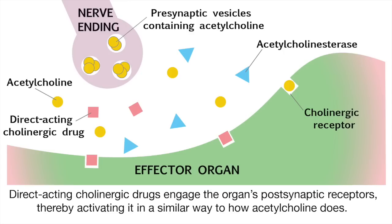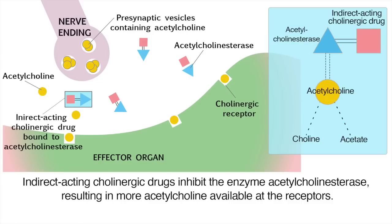Direct acting cholinergic drugs bind to cholinergic receptors on specific effector organs, stimulating the organ in a similar way as acetylcholine. They are synthetic derivatives of choline and have a widespread systemic effect including cardiac muscle, smooth muscle, exocrine glands, and the eye. Indirect acting cholinergic drugs inhibit the enzyme acetylcholinesterase, resulting in more acetylcholine available at the receptors. These drugs have the added cholinergic effect of improved skeletal muscle tone and strength.